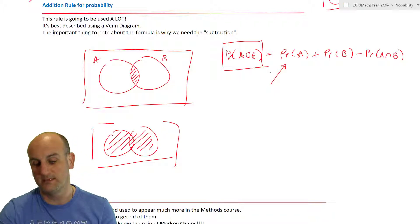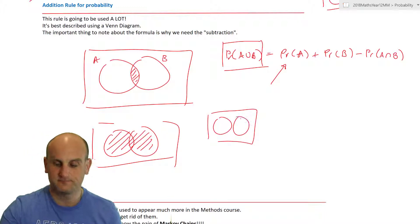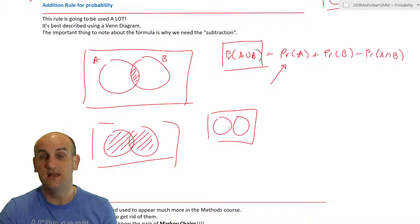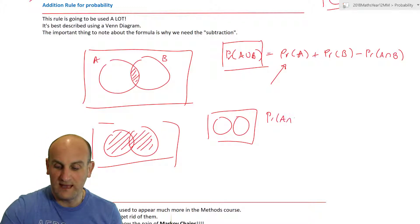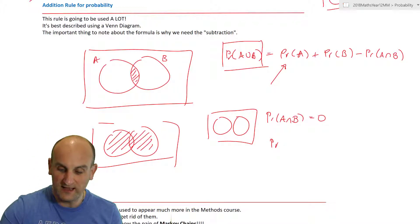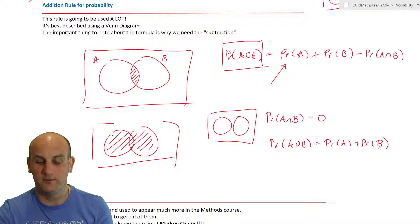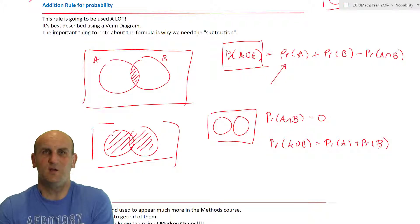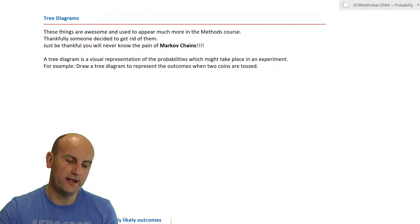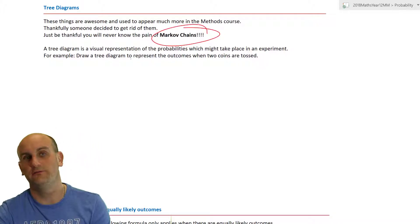This addition rule formula is used all the time. Whenever a question asks for P(A ∪ B) or 'A or B,' use this formula. There is one exception: if events are mutually exclusive, P(A ∩ B) = 0, so the formula simplifies to P(A) + P(B). We don't have to subtract the overlap because there is no overlap to subtract.